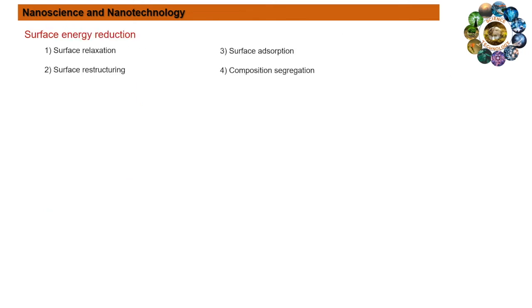Now we try to understand how surface energy reduces at nano level. In general, the formation of bonds between atoms in a solid is accompanied by a decrease in the surface energy. For a given surface with a fixed surface area, the surface energy can be reduced through surface relaxation, surface restructuring, surface adsorption, and composition segregation.